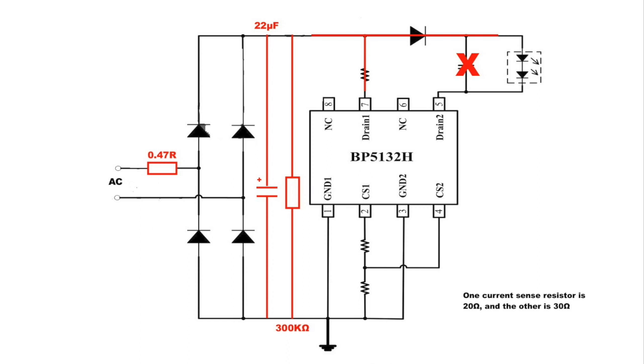And though this driver is supposed to be dimmable, this bulb was specifically marked, not dimmable. I'm guessing that it has something to do with the removal of those three components. If you have an idea what those components are for, please leave it in the comments section below. Finally, they left in the two current sense resistors, a 20 ohm and a 30 ohm.